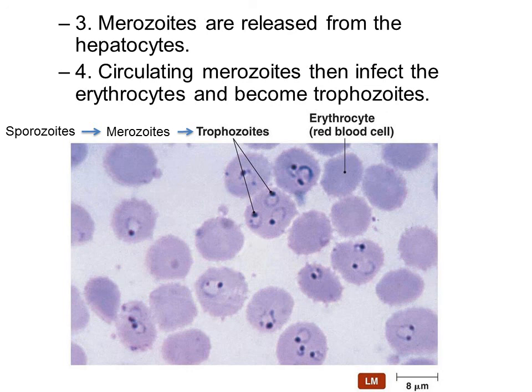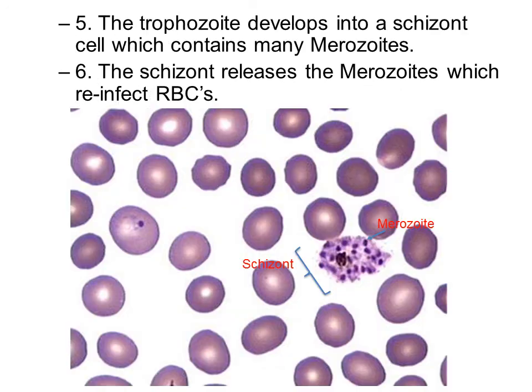These merozoites will circulate alongside erythrocytes — red blood cells — and then infect them. They get inside the red blood cell and become a trophozoite. The trophozoite develops into a schizont, a cell which contains many merozoites — perhaps 20. The schizont cell releases merozoites into the bloodstream, which reinfect the red blood cells.